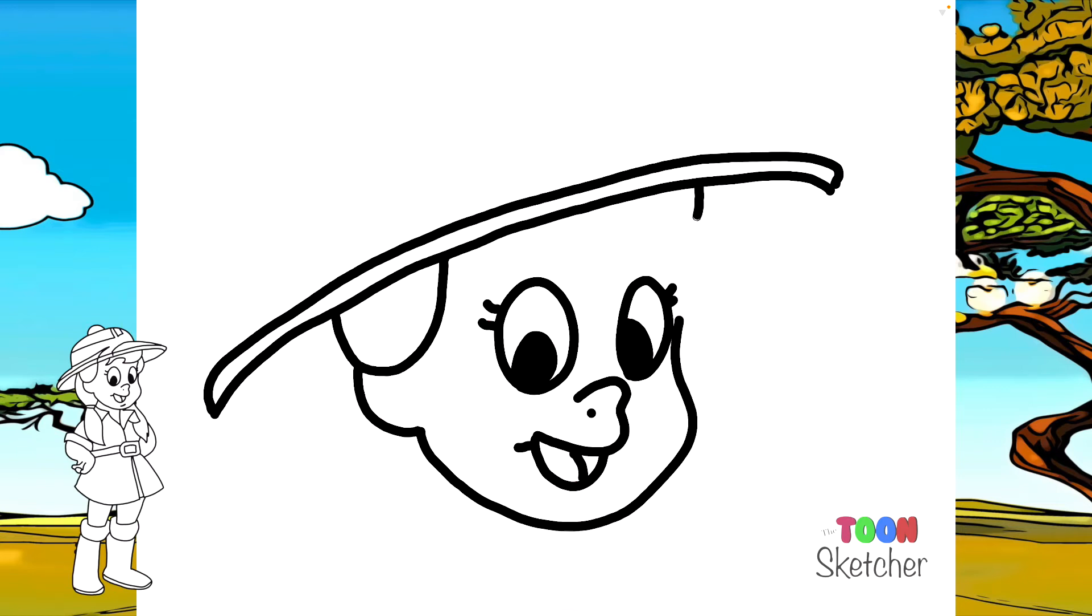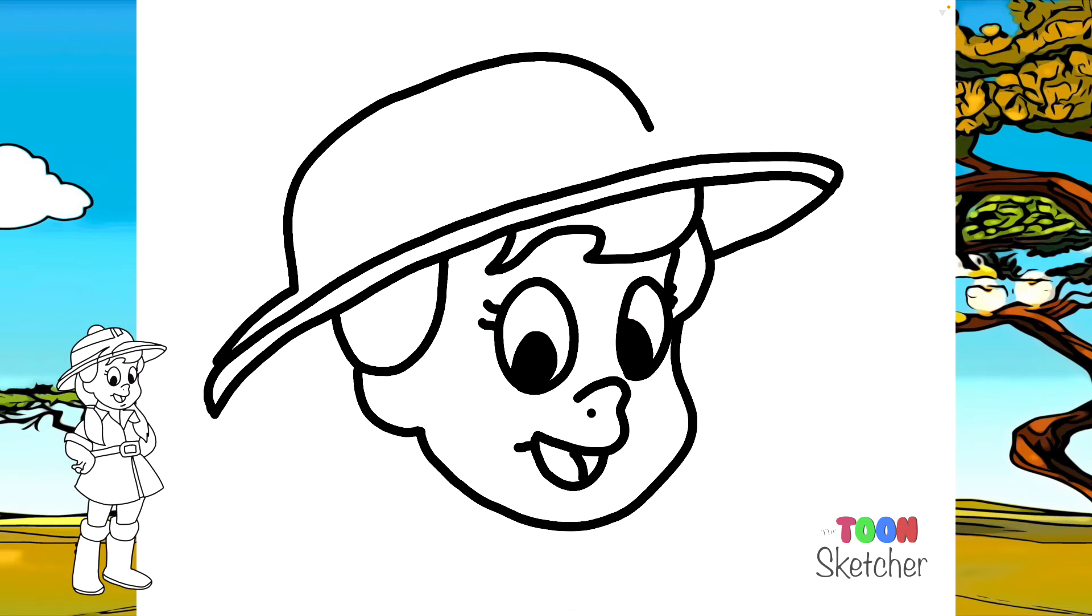She's got some hair underneath her hat right in this area. Some more right here. Her bangs go right into her eyelashes right there. Connect her hat right here. And then on this side here, we're going to go up or over and then up and then back down. We're going to connect it on this side.